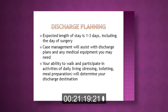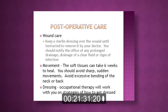The criteria for discharge include being able to walk and pass physical therapy, keep fluids down, and urinate adequately. For post-op wound care, you'll receive instructions on how to handle your wound at discharge. Look at it every day and watch for signs of infection such as redness, swelling, increasing pain, pus drainage, or fever. Soft tissues can take six weeks to heal, so avoid any sharp movements.